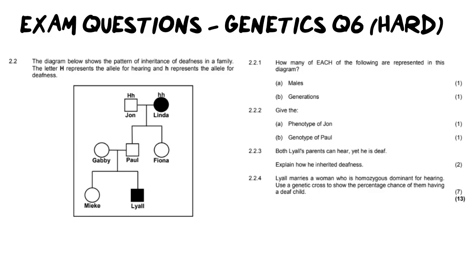So let's get into the video and break down the question. It says the diagram below shows the pattern of inheritance of deafness in a family. The letter H represents the allele for hearing and the lowercase h represents the allele for deafness. Now there's a couple of things they're telling you here before we go any further and this is why you need to get it right from the very beginning so you don't make any mistakes. First things first we need to decide is this an autosomal cross or is this a sex-linked cross.